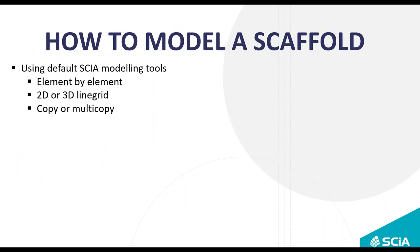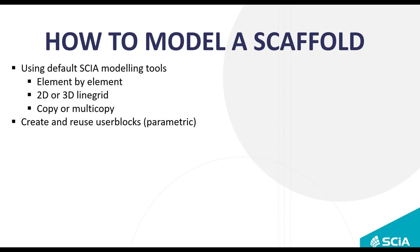Starting with scaffold modeling: for those who know CSE already, you can model element by element — columns, beams, and so on. To assist you, you can use 2D or 3D line grids. Since scaffolding involves a lot of repetition, once you've modeled a specific part you can easily copy or multi-copy it to quickly complete your structure.